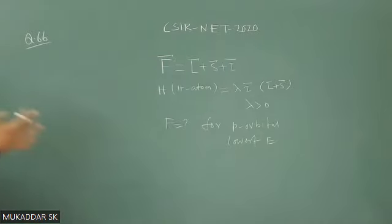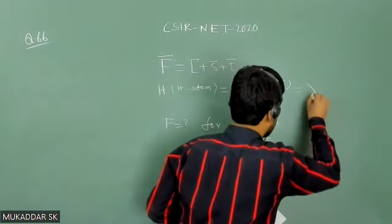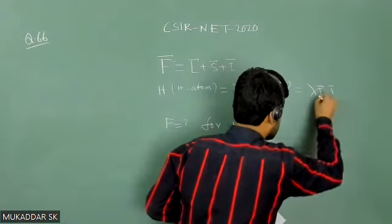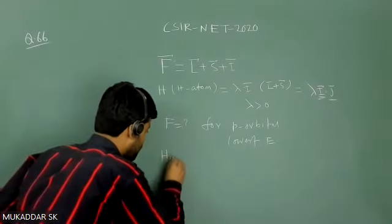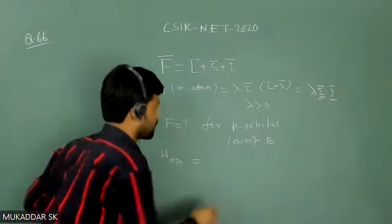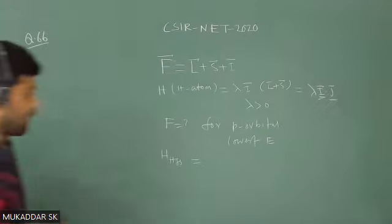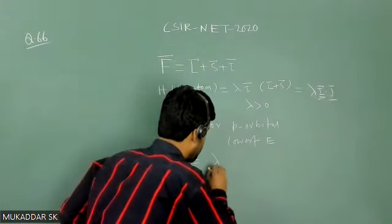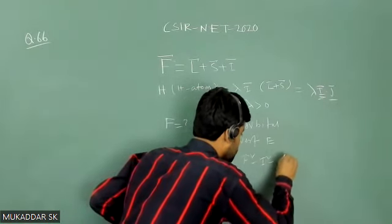From the given interaction Hamiltonian, it is clearly noticeable that this is known as the hyperfine structure Hamiltonian, because L·S combined gives J. So λ·I·J represents the interaction between nuclear spin and J, which is known as hyperfine splitting. The hyperfine Hamiltonian H_HFS can be written as λ·I·J, which can further be written as (λ/2)(F² − I² − J²).